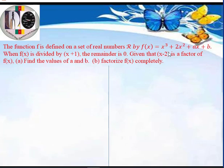The question says: the function f is defined on the set of real numbers ℝ by f(x) = x³ + 2x² + ax + b. When f(x) is divided by (x + 1), the remainder is 0. Given that (x − 2) is a factor of f(x), find the values of a and b, then factorize f(x) completely.